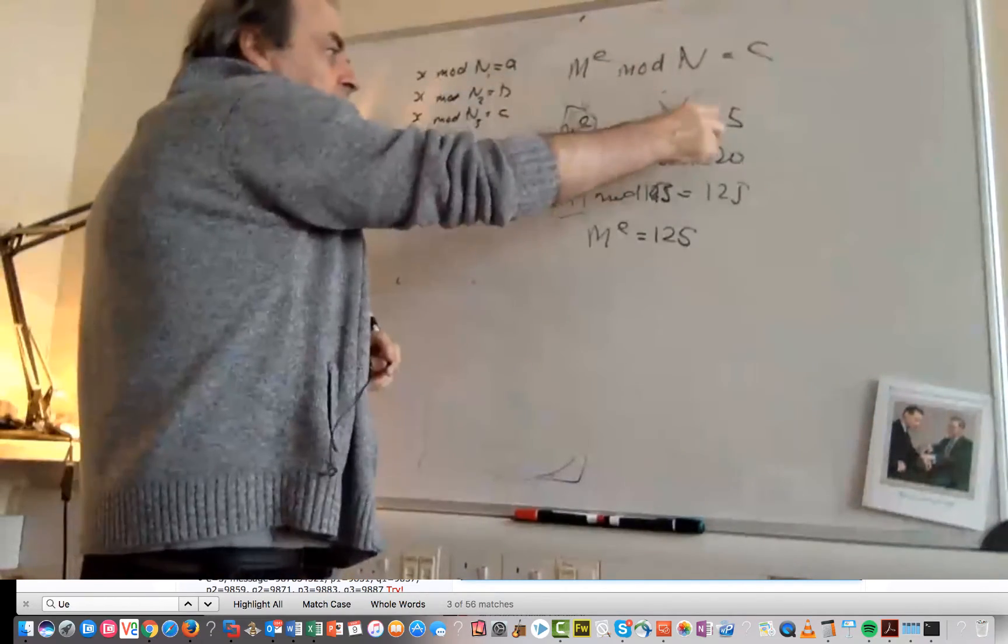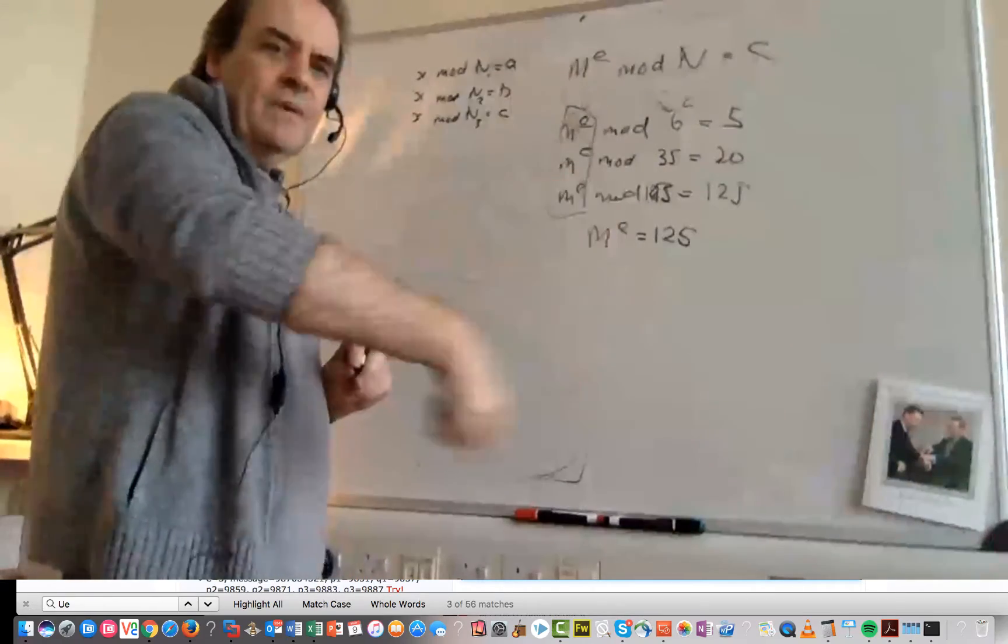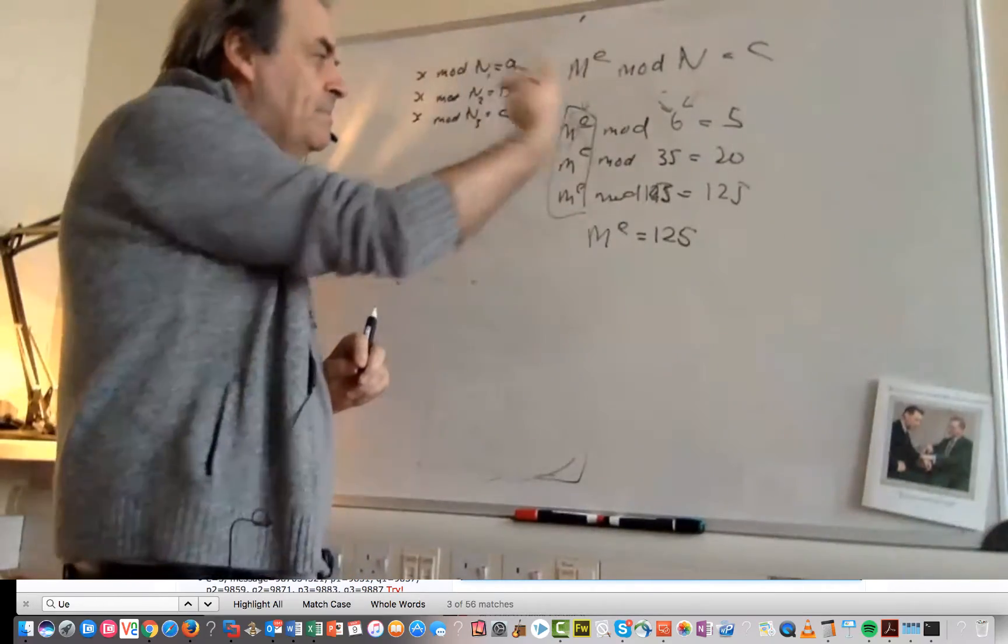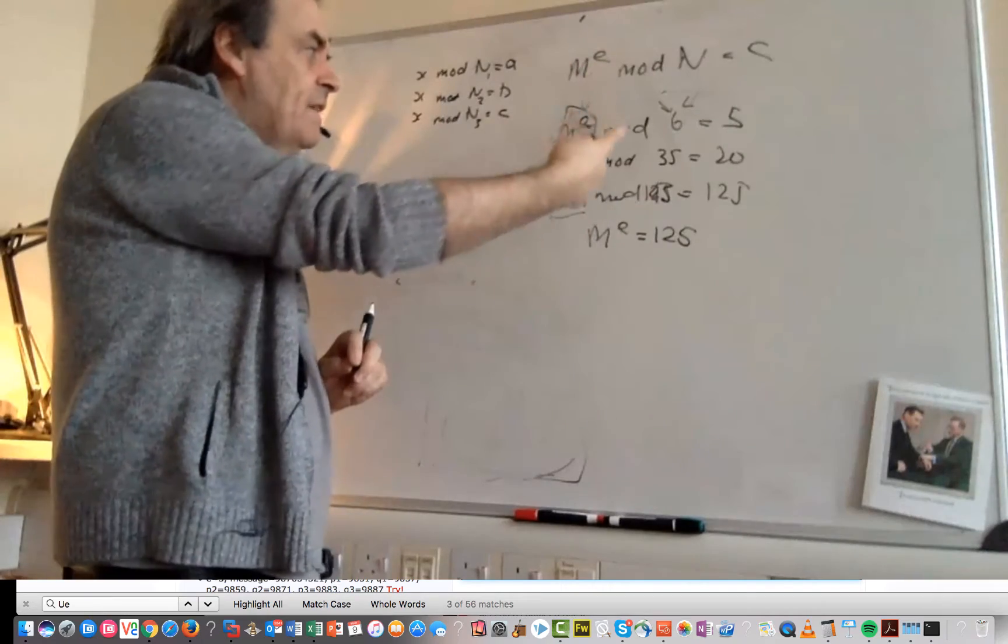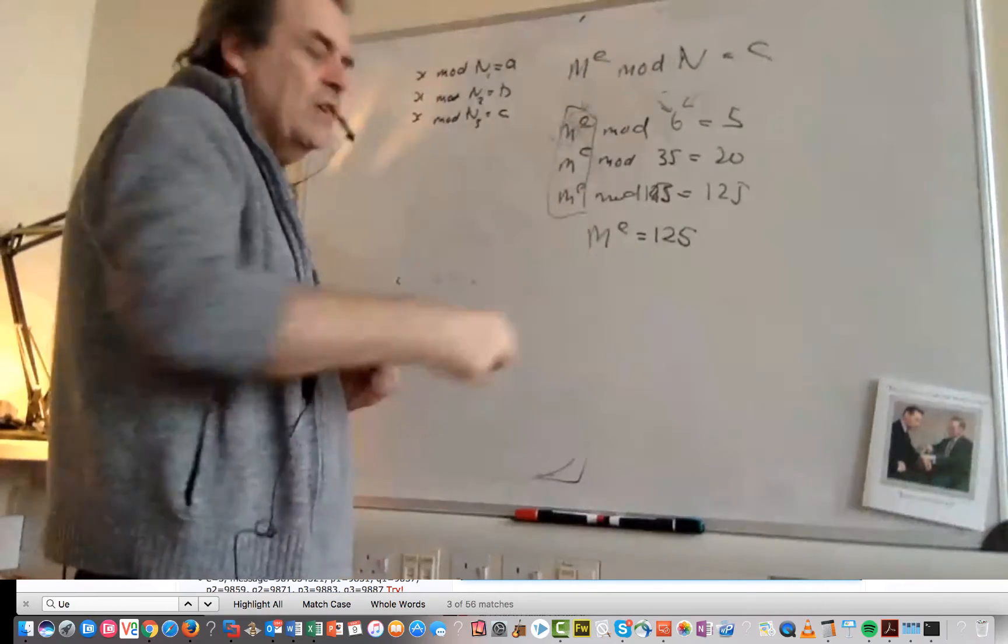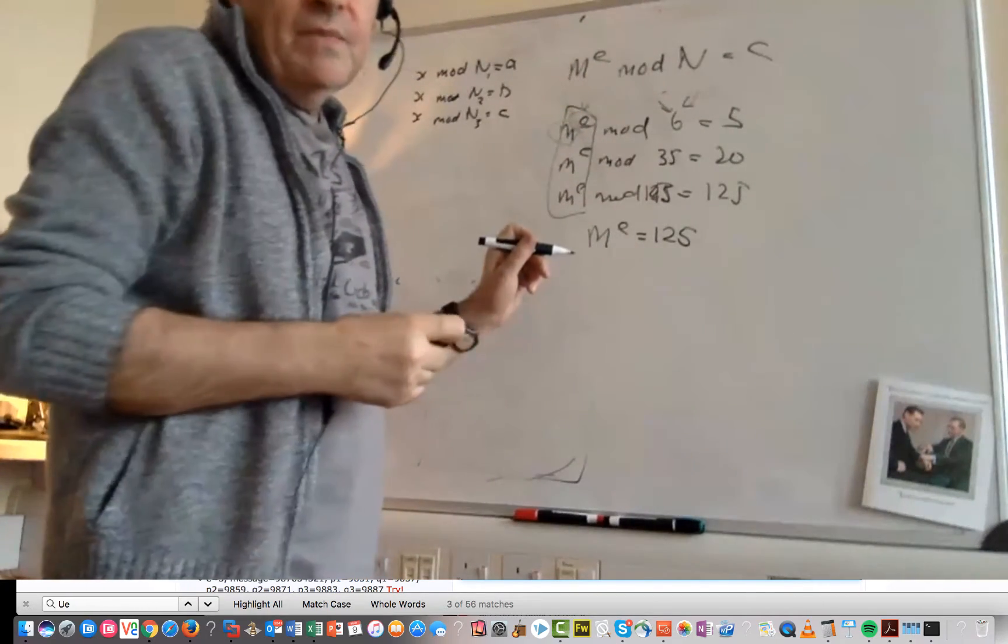But the N value is changing. So we just have to make sure that we have three different public keys, different N values, and we can crack with Chinese remainder theorem.